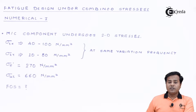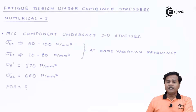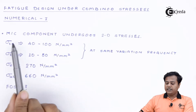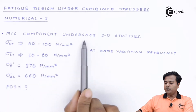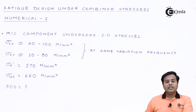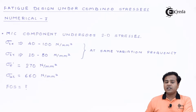Students, you can see this numerical on the screen. Let me quickly read it out for better understanding. It says that a machine component undergoes 2D stresses — they have clearly mentioned that the stresses here are 2D in nature.